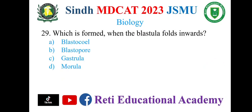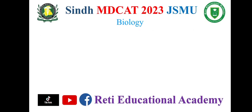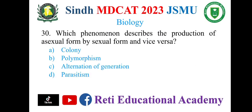Which is formed when the blastula folds inwards? A. Blastocoel, B. Blastopore, C. Gastrula, D. Morula. The correct option is C. Gastrula. Question number 30.